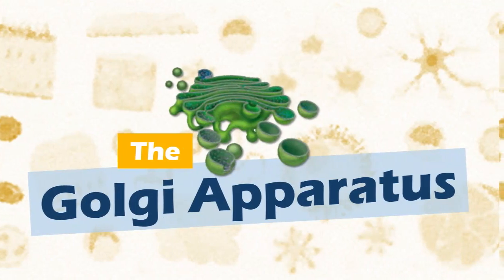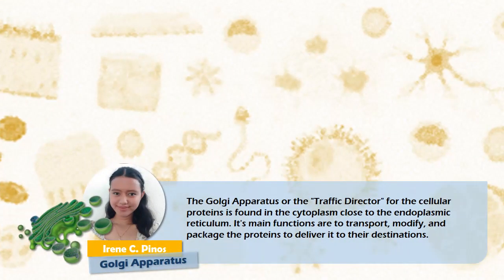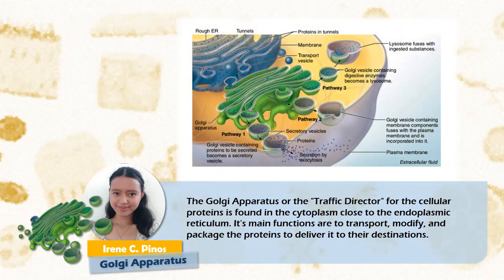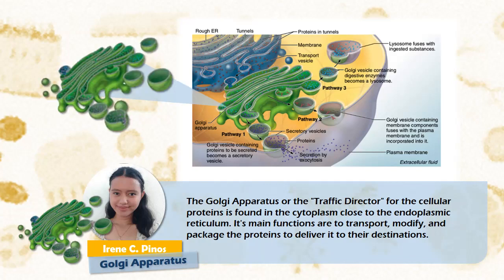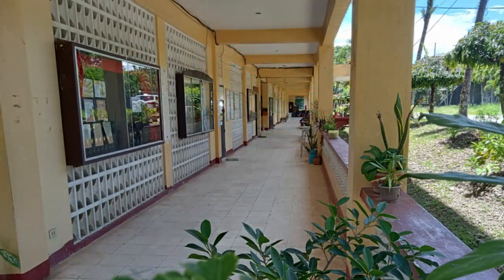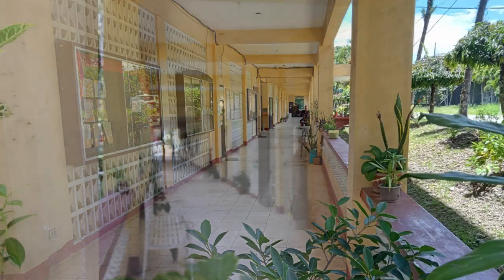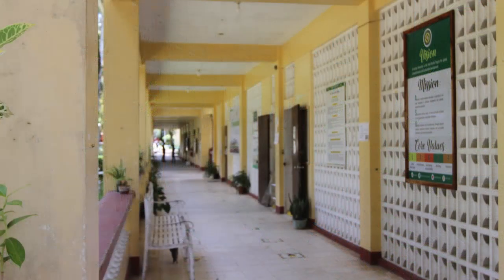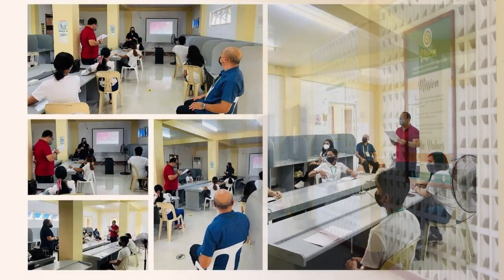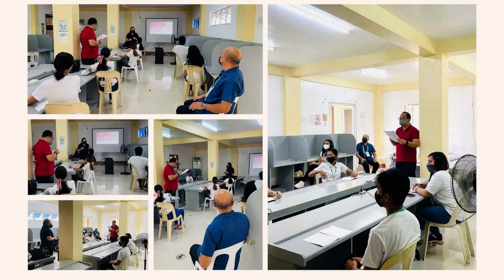The Golgi Apparatus. The Golgi apparatus — or the traffic director for cellular proteins — is found in the cytoplasm close to the endoplasmic reticulum. Its main functions are to transport, modify, and package proteins to deliver them to their destinations. The Golgi apparatus is like our classrooms: it is where learning and the organization of proteins happen. The classroom is a room dedicated primarily to teaching and learning, where knowledge is formulated. With the help of teachers, comparable to ribosomes, it is the place where knowledge is organized and students are prepared and molded to their best capacity.